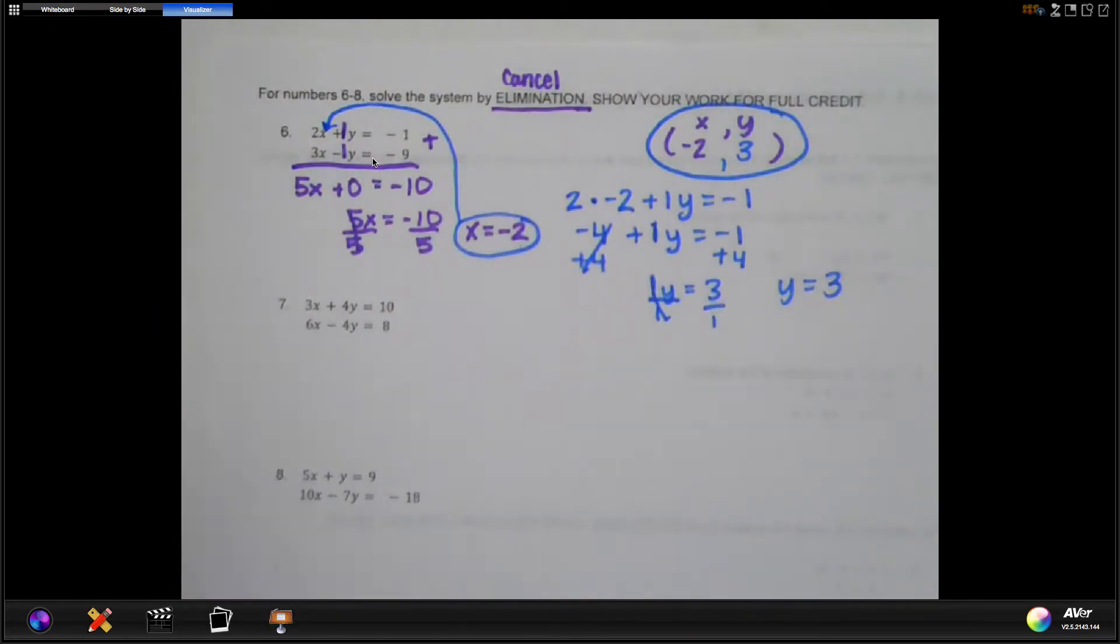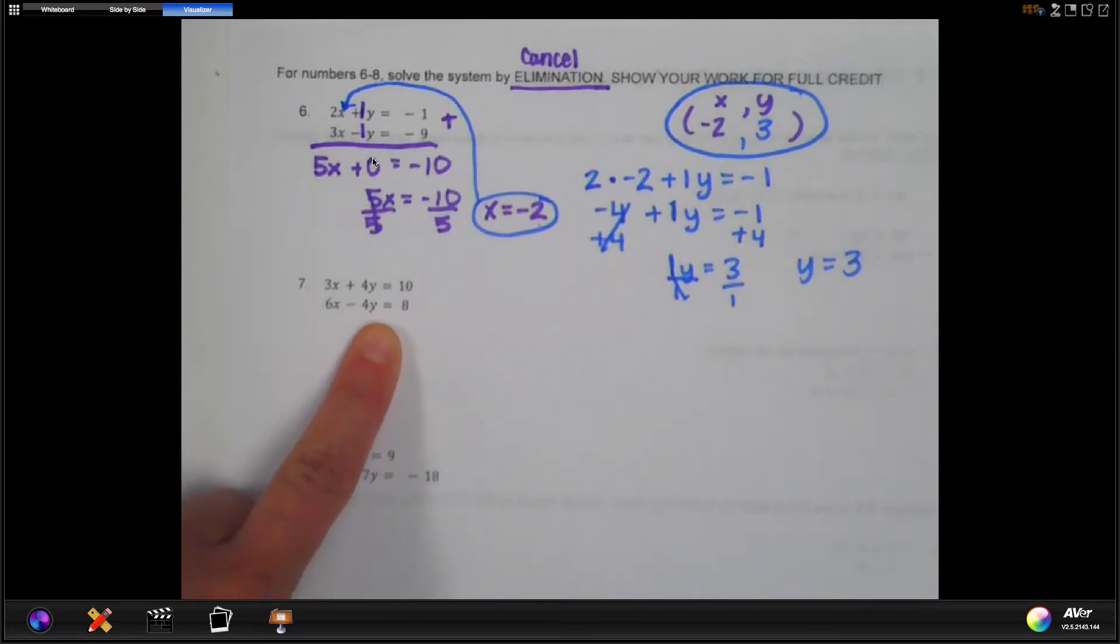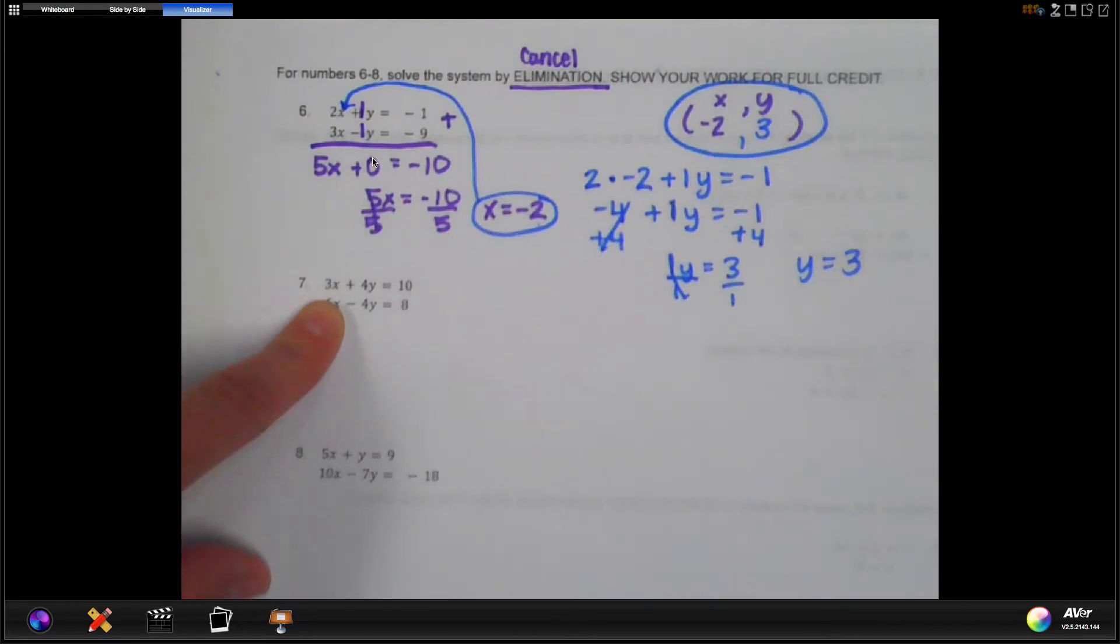Okay, let's go again. So number seven is very similar to six. I'm going to leave that one for you. Notice there's a positive four y and a negative four y. That should be the ones that will cancel.